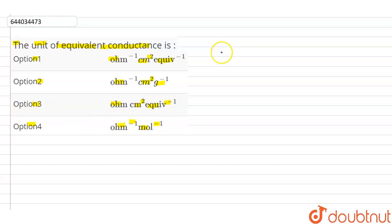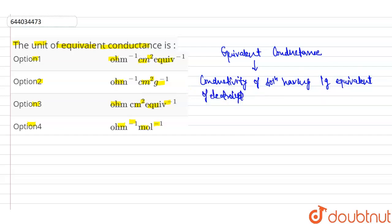Now firstly, we are talking about what is equivalent conductance. It is a conductance in which conductivity of solution having one gram equivalent of electrolyte in one meter cube of solution.